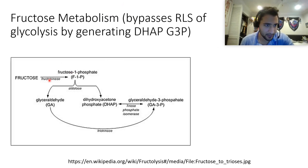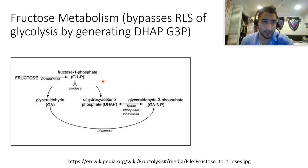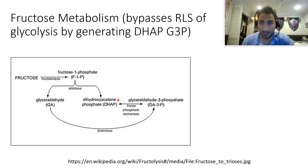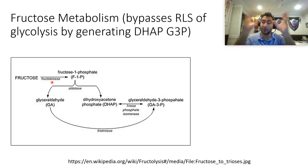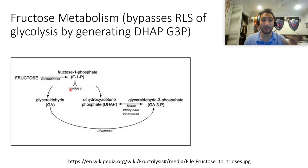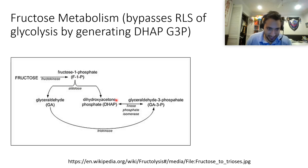In fructose metabolism, fructokinase traps fructose as fructose-1-phosphate for metabolic use — similar to how hexokinase traps glucose. Phosphofructokinase has nothing to do with this reaction. Fructokinase produces fructose-1-phosphate, and then aldolase cleaves it into glyceraldehyde-3-phosphate and DHAP, which enter the glycolysis pathway. There is a clinically important aldolase deficiency to know.